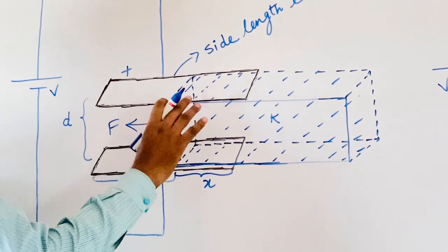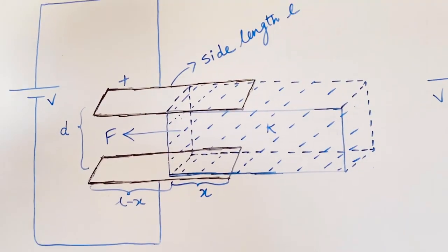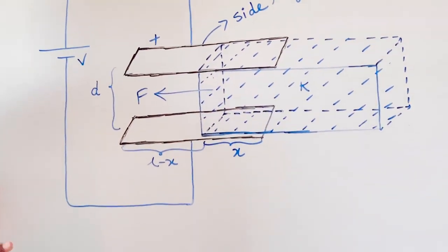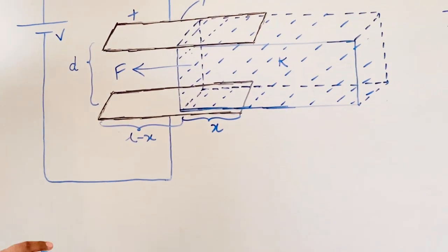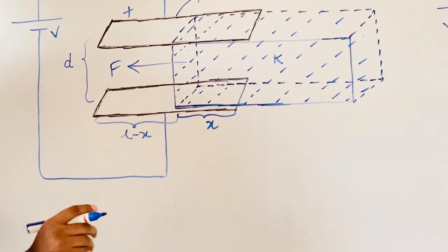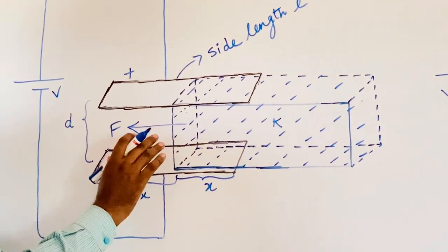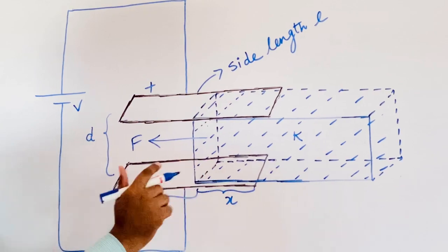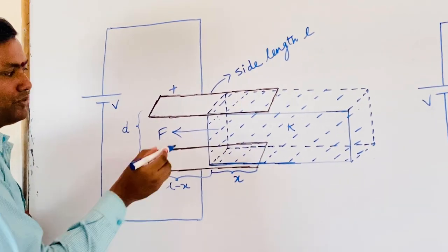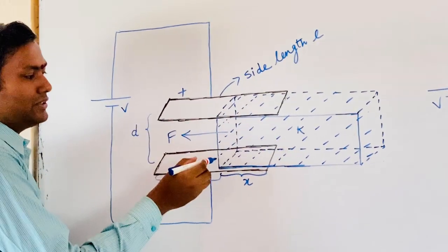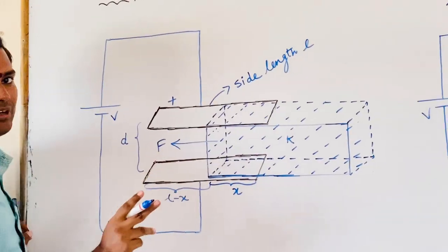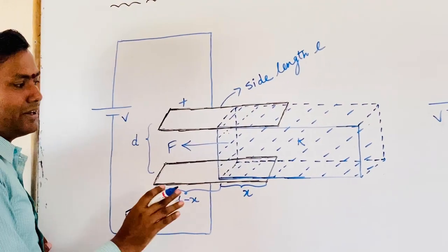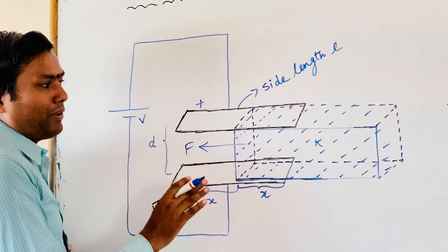Here, one little question to you: how many capacitors are we seeing here? Please pause the screen and think yourself. So, here actually this is completely only one capacitor, but if you observe carefully, this is the combination of two capacitors that are connected in parallel.